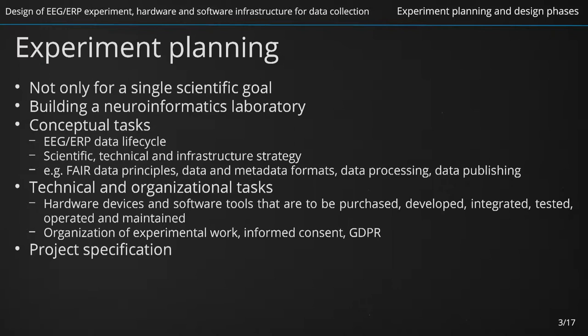The experiment planning phase has, of course, also its single-purpose part that describes why, what, when, where, who, and how to collect, store, manage, share, and publish data obtained from a specific experiment. This is a relatively common project specification task. However, its description is important for the ethics committee to approve the experiment proposal.